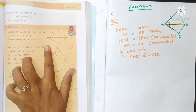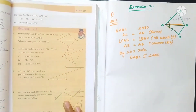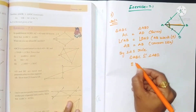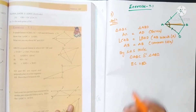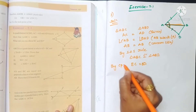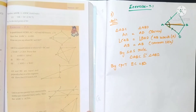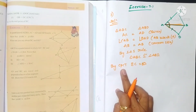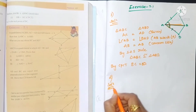triangle ABD. That's it — they asked us to show it and we showed it. Now, what can you say about BC and BD? BC and BD are corresponding parts. So BC is equal to BD. By CPCT — Corresponding Parts of Congruent Triangles. Congruent means all parts are equal, so the corresponding parts are also equal.